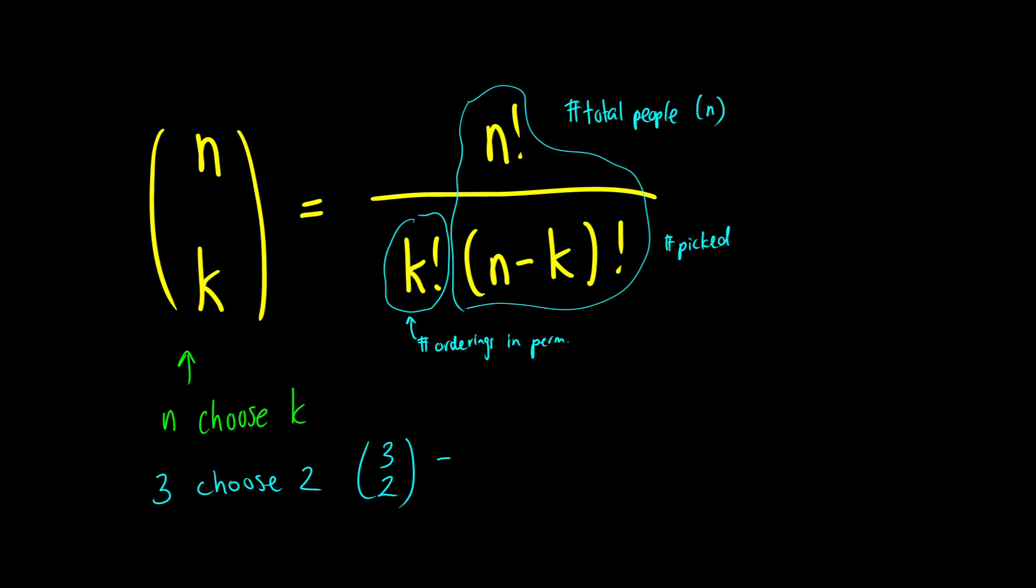So if we were to write this formula out, we'd get something very similar. We'd get three factorial on the top. We're choosing two. So we're going to get two factorial on the bottom. And then we're choosing two from the list. So we're going to get three minus two factorial here. This will simplify to three factorial over two factorial times one factorial.